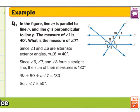Example four: here we have two parallel lines and two transversals. The two transversals are perpendicular because they make a perfect 90 degree angle. We could solve for all the angles by only knowing one. In the figure, line M is parallel to line N and line P is perpendicular to line Q. The measure of angle one is 40 degrees.